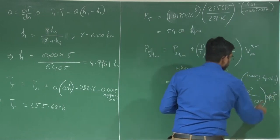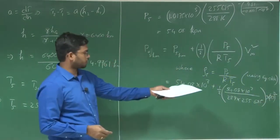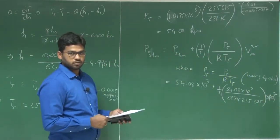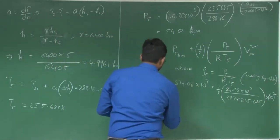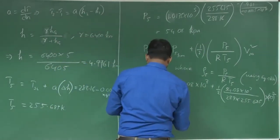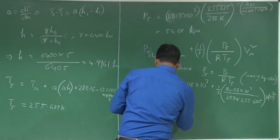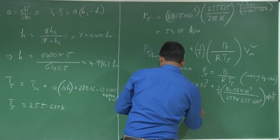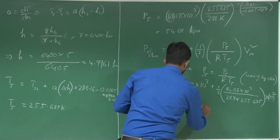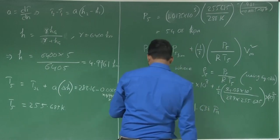This gives us: P_0 at 5 kilometers equals 54.08 × 10³ plus half times (54.08 × 10³ divided by 287 times 255.685) times 30 squared. The aircraft is moving at 30 meters per second. What we get from here is 54,411.638 pascals.